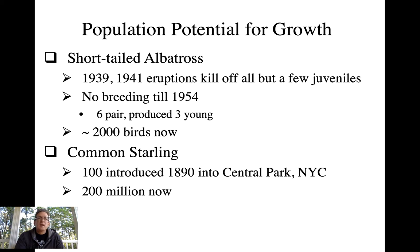Some species when their populations drop have a long road ahead because they've got a long way before they can build back up to large numbers. The short-tailed albatross is a great example — in the late 1930s and early 1940s a series of eruptions on volcanic islands killed off all the adults breeding in colonies. There were a few juvenile individuals that weren't sexually mature and were out flying pelagically, so they survived, but breeding wasn't detected until 1954.